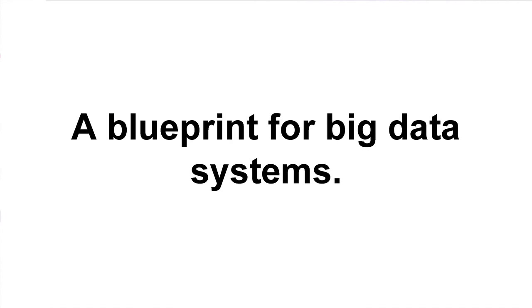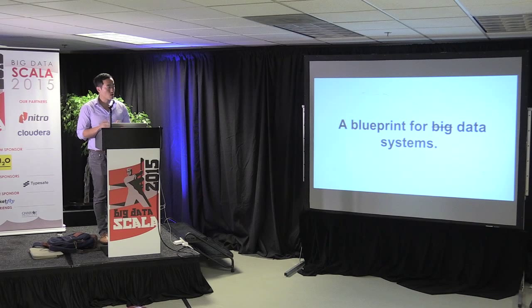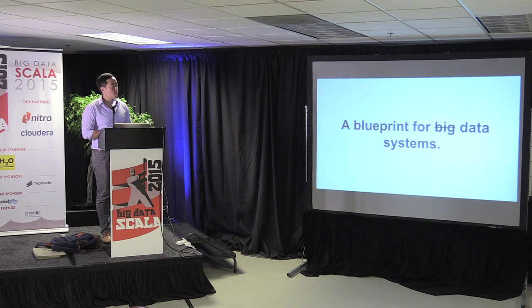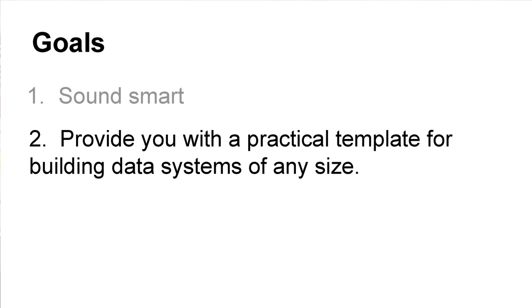If we go back to the 1960s, people started building particle accelerators and discovering all these random particles they were trying to put together into some kind of cohesive framework. Then they discovered the standard model of particle physics, which not only described all those existing particles but also predicted new particles they didn't even have the technology to find at the time. I'm hoping you can look at the Lambda architecture as this kind of standard model of data systems — maybe that's a bit ambitious, we'll find out.